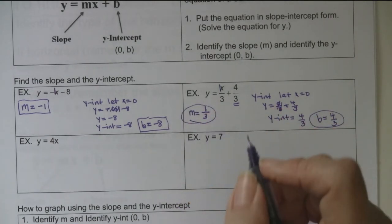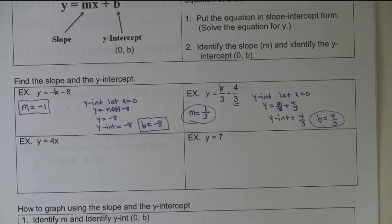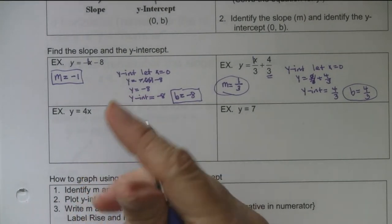The reason I continue to show letting x equal 0 is because people forget they learned to find the y-intercept back in section 2.3 by simply letting x equal 0, and it gives people trouble.